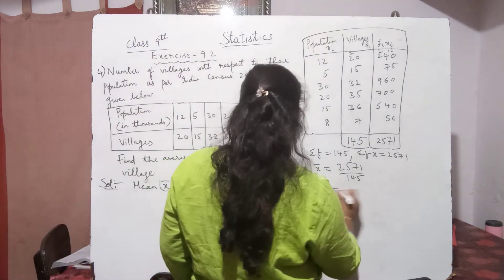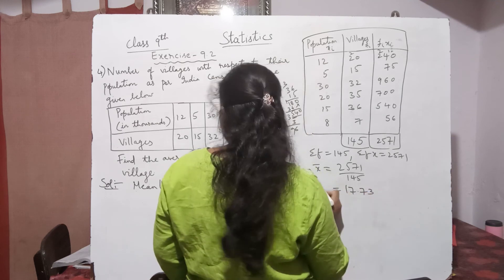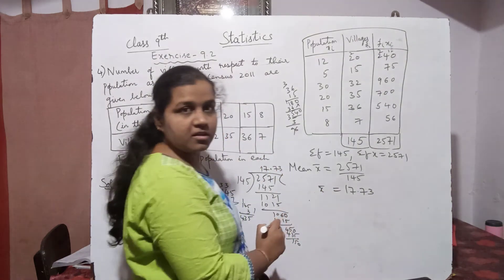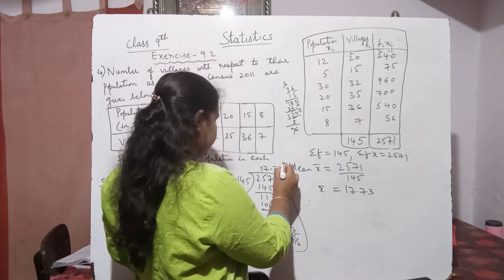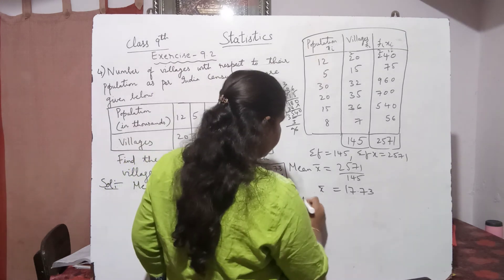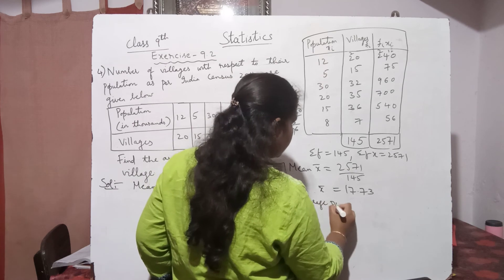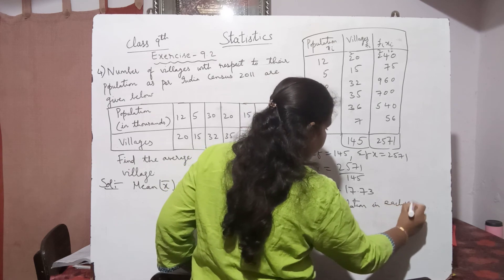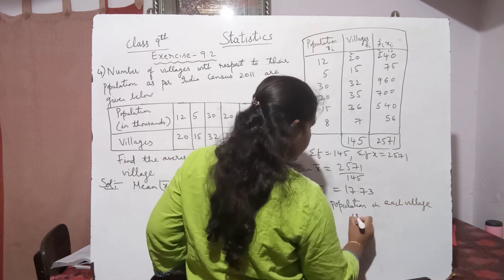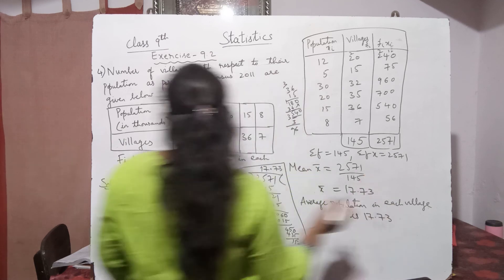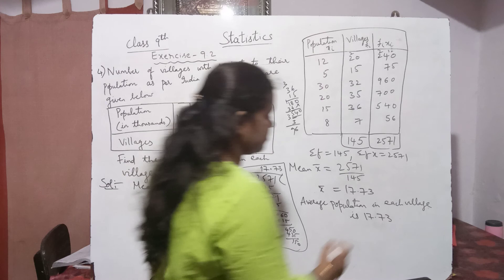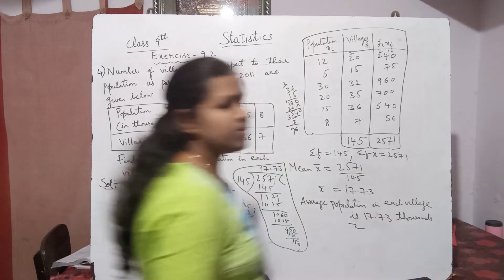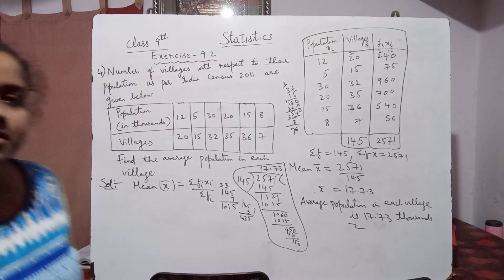The mean average population in each village is 17.73 thousands, because the data was given in thousands. This is how we solve this type of problem. Kindly like, subscribe, and share my channel.